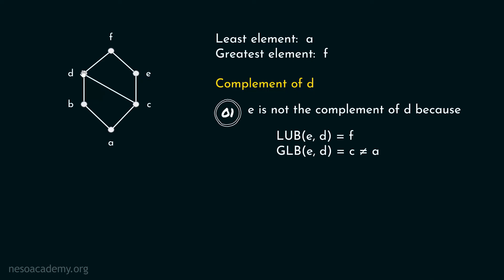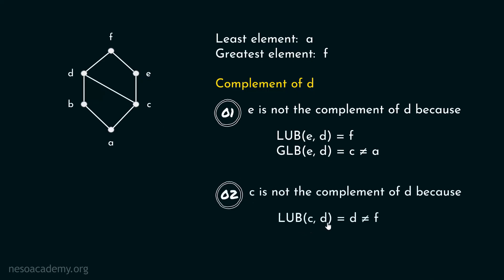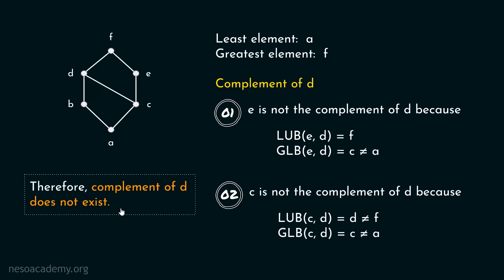C is not the complement of D either, because the least upper bound of C and D is D, and the greatest lower bound of C and D is C. B is not the complement of D. A is not a complement of D because the least upper bound of A and D is D, not F. F is not a complement of D because the greatest lower bound of F and D is D. Hence it is clear that D has no complement — complement of D does not exist. This is fine, since at most one means zero or one complement, but we must not have more than one.